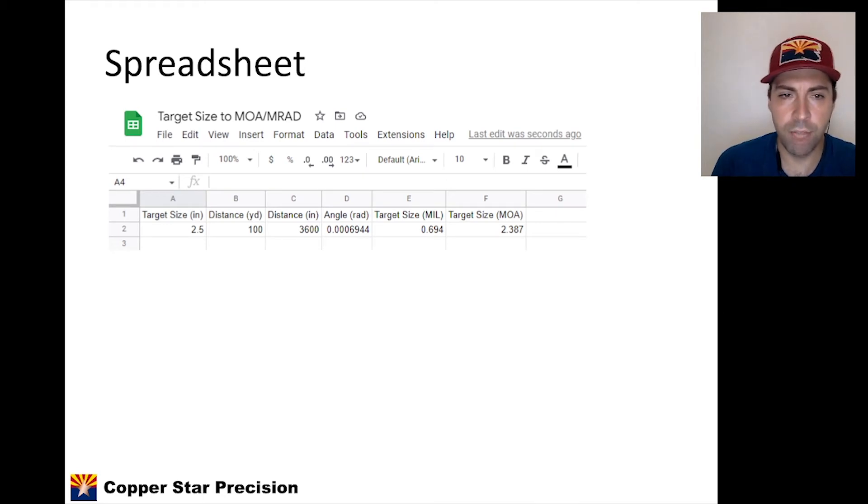Here is how I had my spreadsheet laid out. It's simple, it's just columns A through F. We start with a target size in inches and the distance in yards. Now, if you're living in another part of the world where your target sizes are given in centimeters or fractions of a meter and your distances in meters, you'll have to make the appropriate conversions, but it should be very similar. We have target size, column A, distance in yards, column B. Column C is going to be distance in inches. All we're doing is converting yards to inches. Column D is the angle, and it's going to be in radians by default. And then we're going to have the target size in mils and target size in MOA. The first two columns, A and B, are inputs. Everything else is calculated for us.